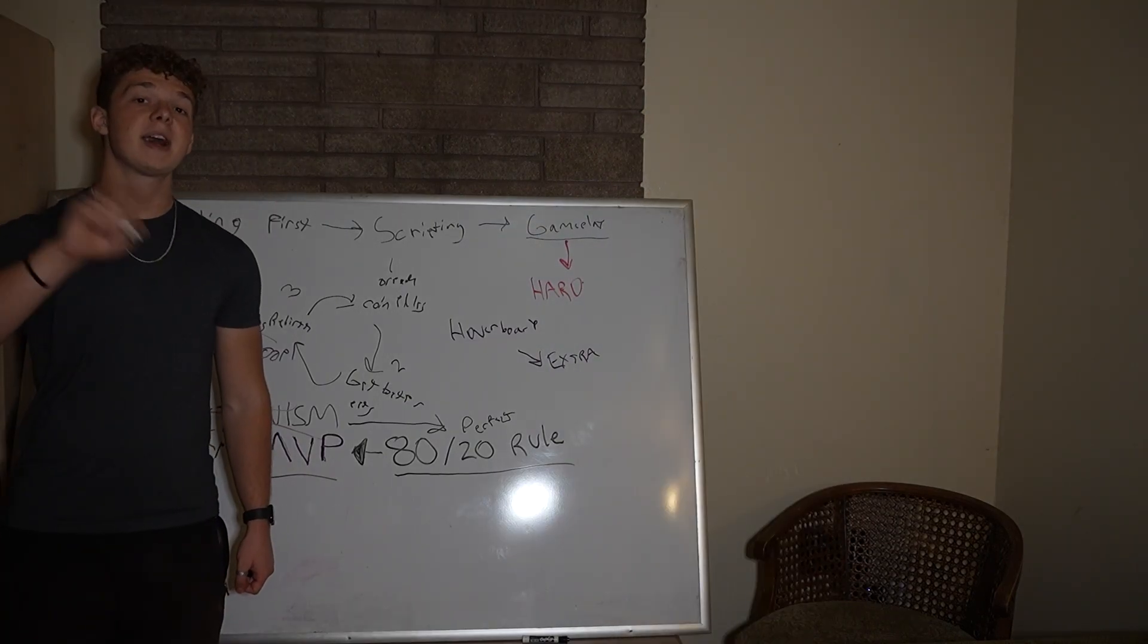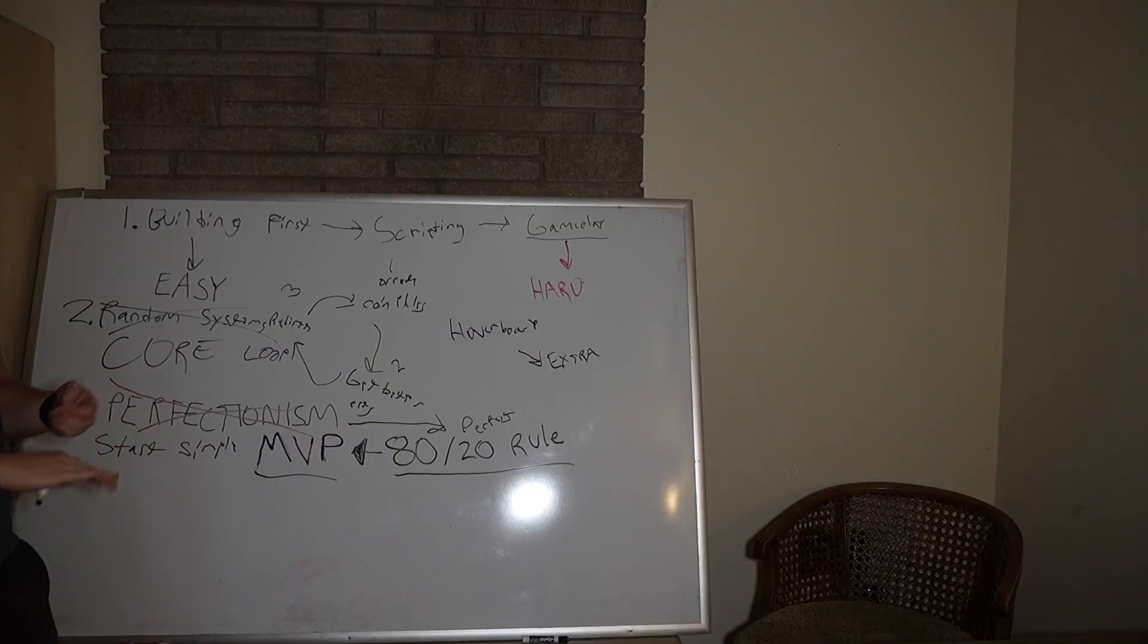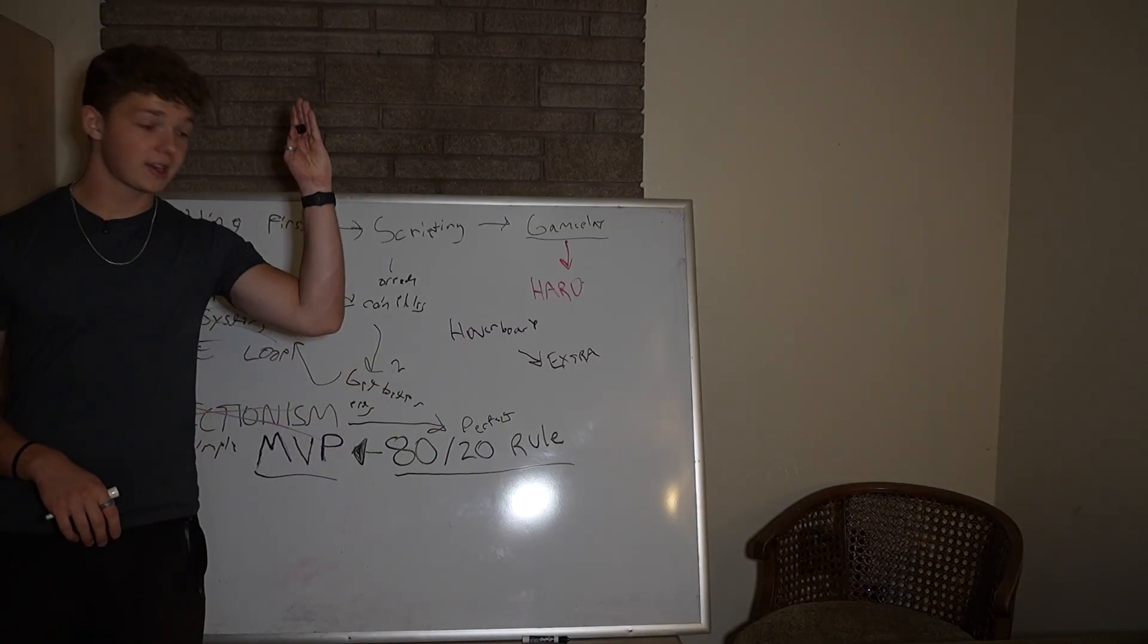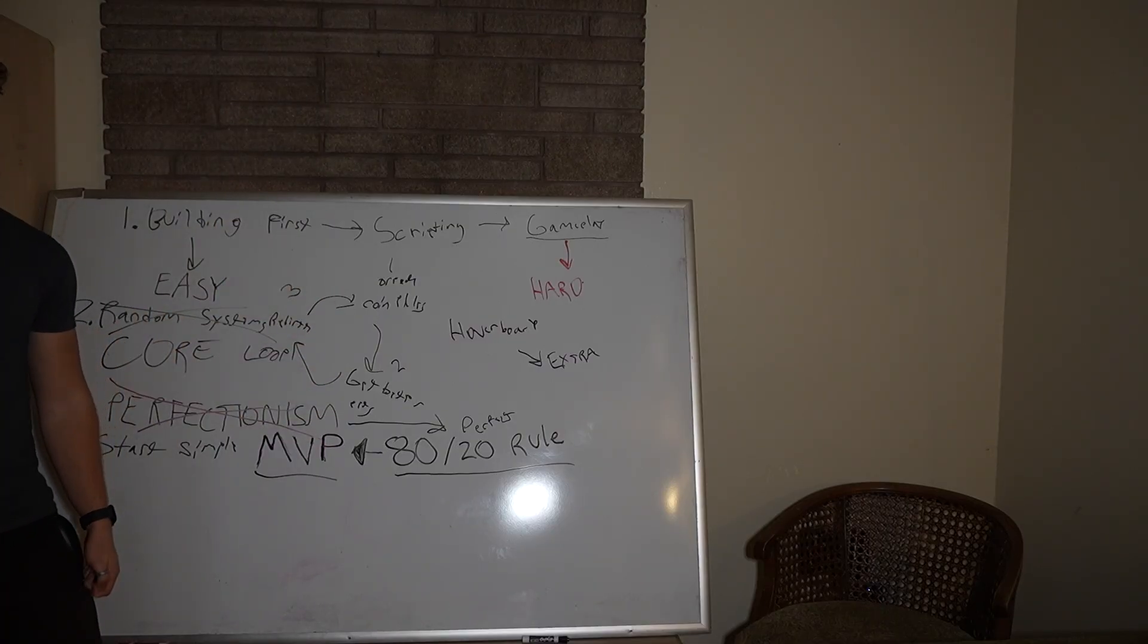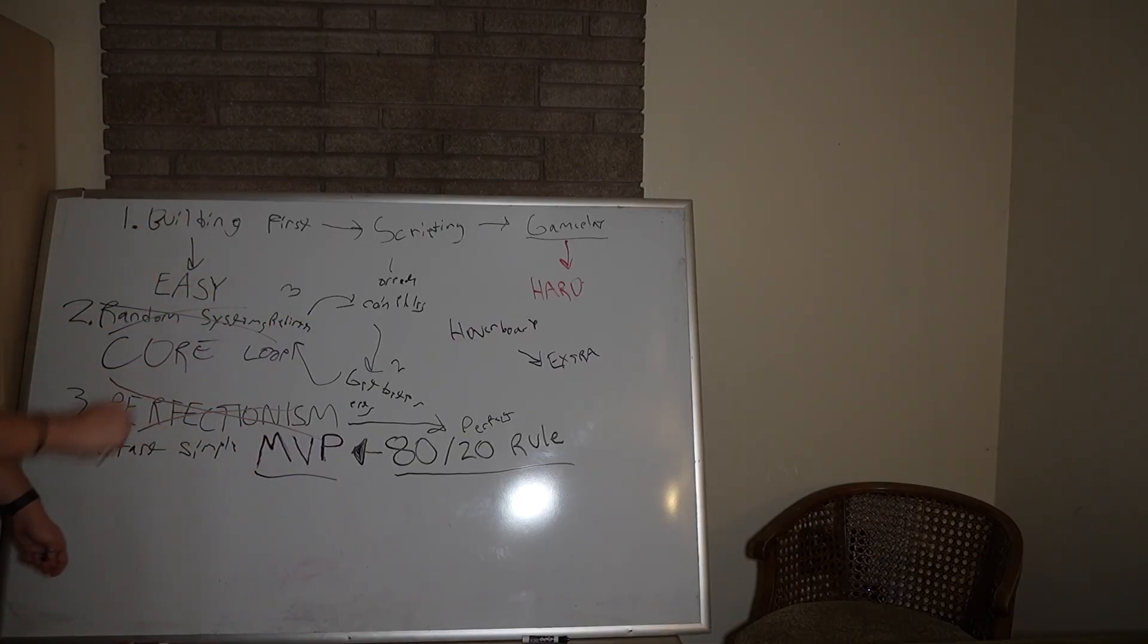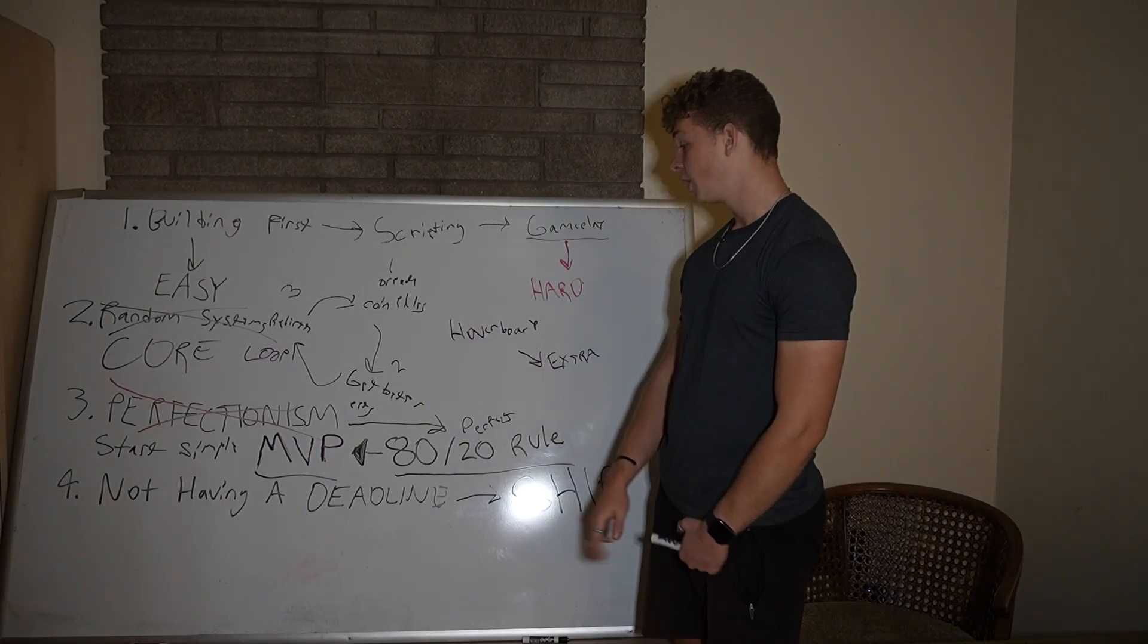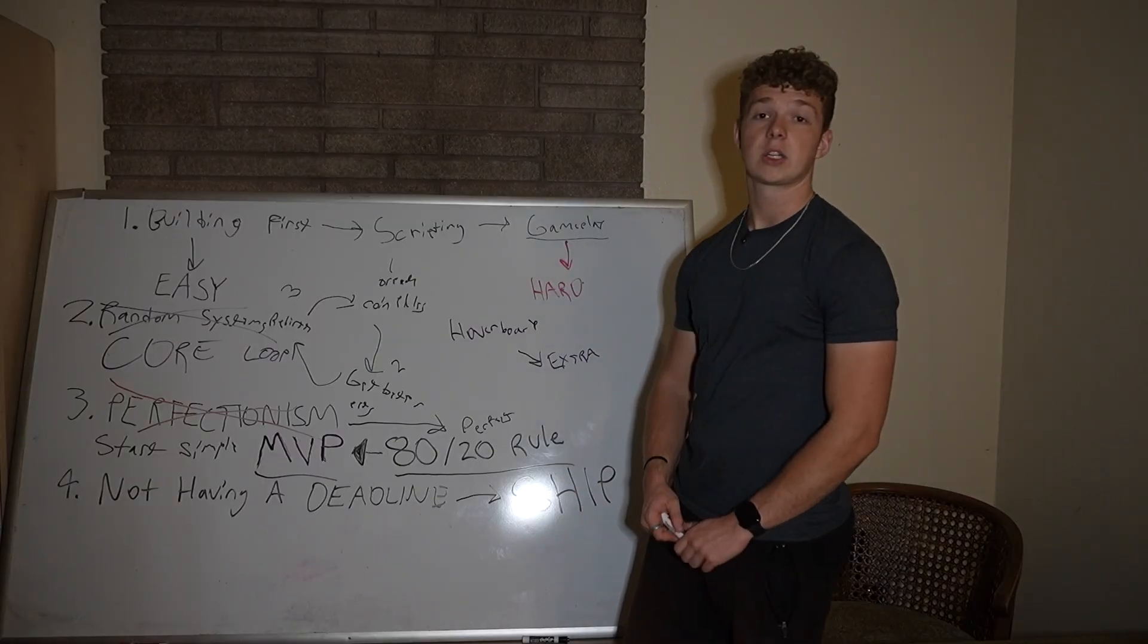Now, the fourth thing that made my game development slower than it needed to be was not focusing on releasing the game, not focusing on a specific deadline. We need to get the game out by this time or else. We need to hit this date. We need to get this game out by October 1st. And we need to do everything we can, everything in our power to get there.